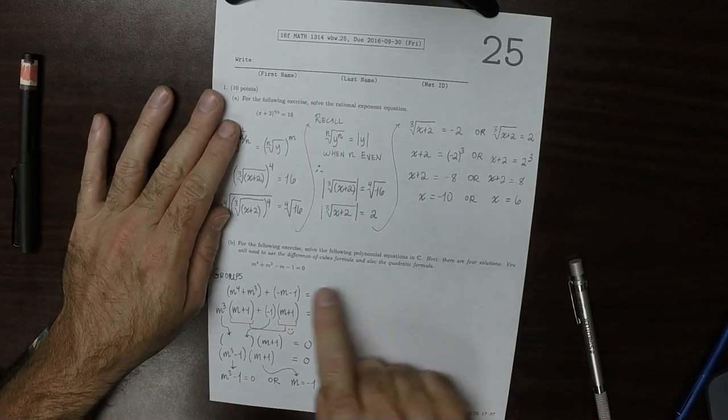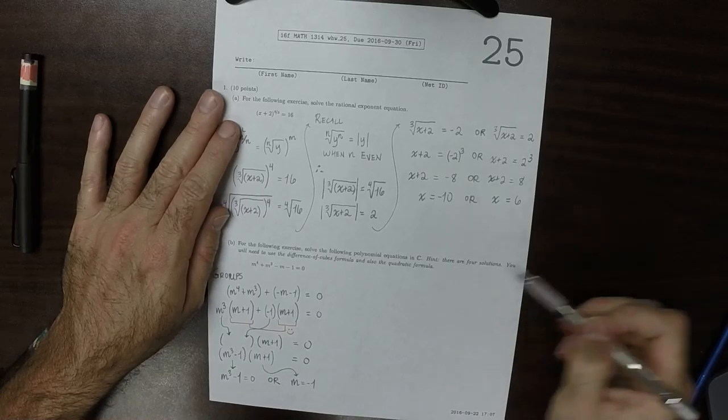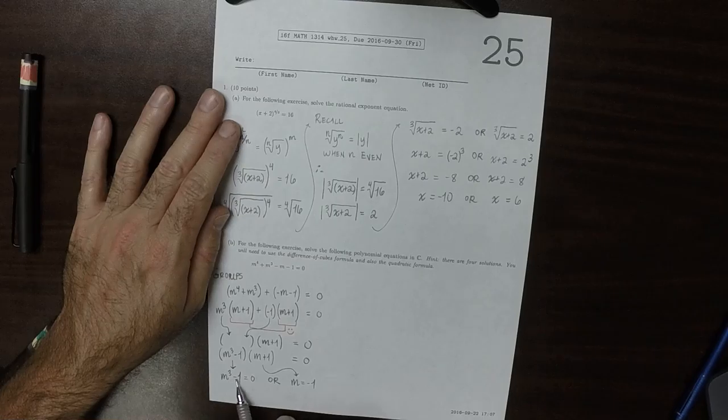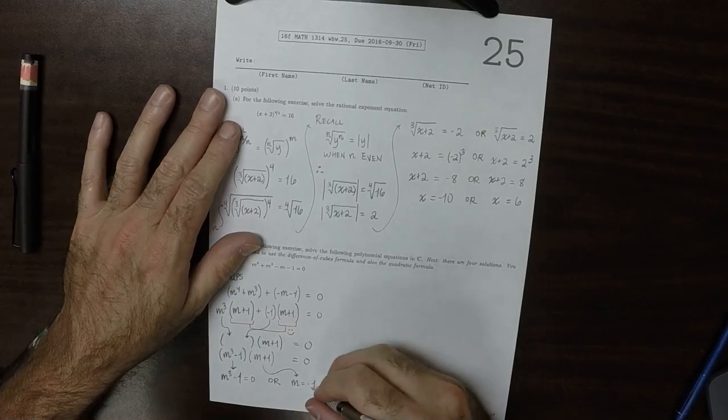This one is finished. This one has yet to be finished. So now, here's where the hint comes in. You will need the difference of cubes formula and also the quadratic formula. There are four solutions. So this is a single solution, so it must be the case that this one contains three solutions.